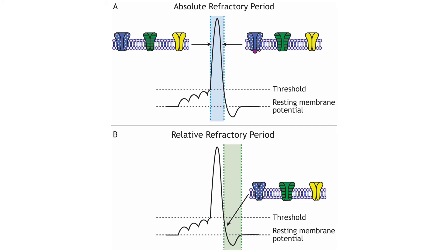However, during the end of the falling phase and during the undershoot, voltage-gated potassium channels are still open. During the undershoot, while the neuron is hyperpolarized, a larger-than-normal stimulus is needed to make the cell reach threshold again. This segment of the action potential is called the relative refractory period. Action potentials can be fired, but a stronger stimulus is needed than when the cell is at rest.